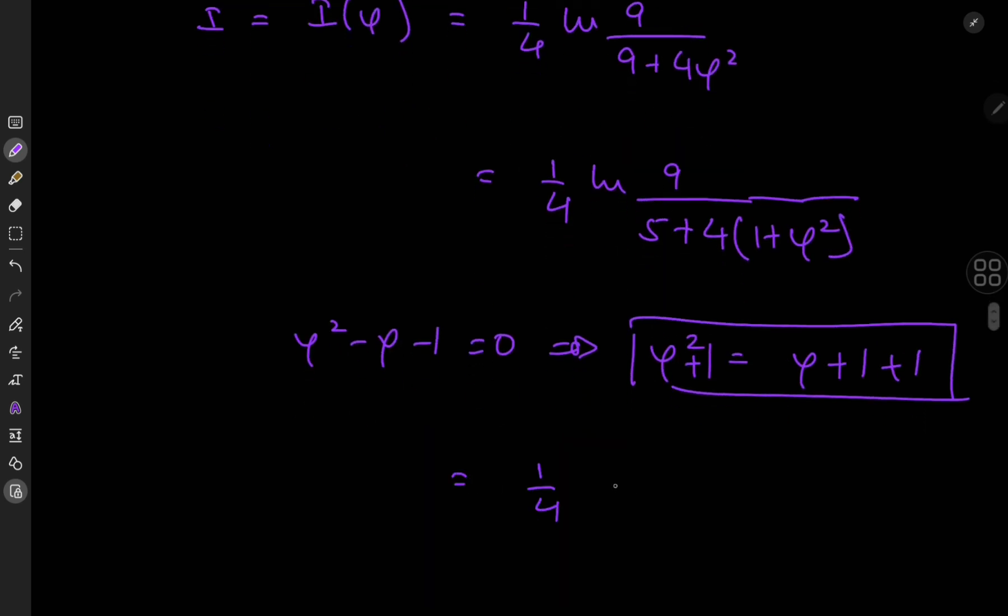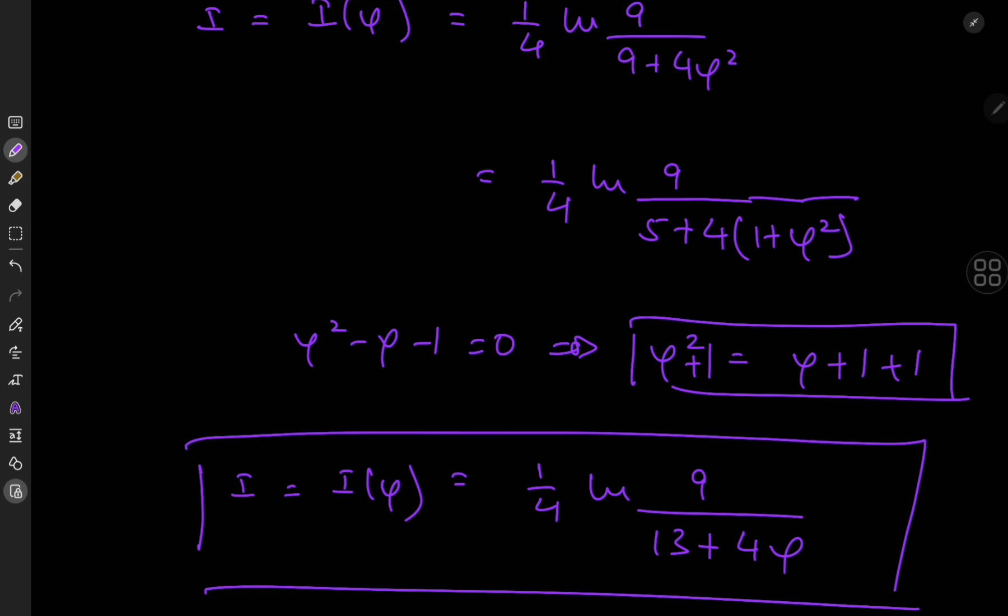Okay, cool. So we're left with a quarter of log 9 divided by 5 plus 4 times 2 is 8. So we're left with 13 plus 4 times phi. Okay, cool. So that is our target integral i. I hope you enjoyed the video. Be sure to like and subscribe. Thank you. See you next time.